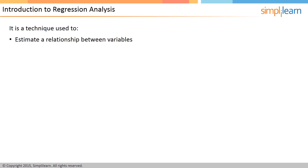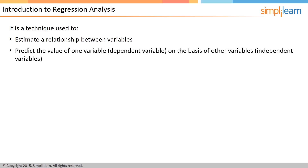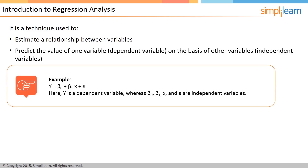This is an example of bivariate data — that is, two variables. However, statisticians are mostly interested in multivariate data. Regression analysis is used to predict the value of one variable, the dependent variable, on the basis of other variables, the independent variables. In the simplest form of regression, linear regression, you work with one independent variable. The formula for simple linear regression is shown on the screen.